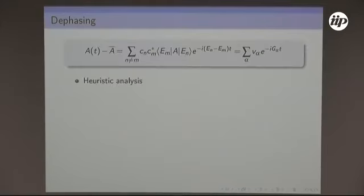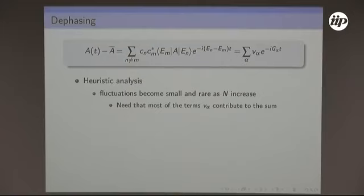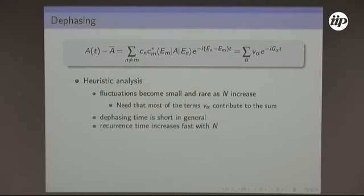What I'm presenting is a heuristic analysis — not rigorous at all. The idea: thinking about these complex numbers, I know that as the number of particles increases, the spread should decrease and fluctuations become small. It's important that most of these terms are nonzero, that the initial state is not a superposition of just a few eigenstates, and that most gaps are distinct. You also see that the dephasing time is short in general, and for a finite system there will always be recurrences, but they increase very, very fast — if you take the thermodynamic limit, they go to infinity.